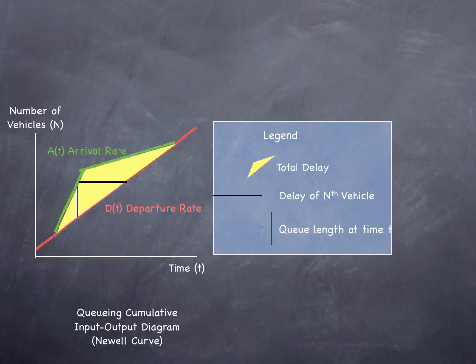There's an arrival rate. How do people arrive at the back of the queue? If the number of arrivals is less than the number of departures and it's uniform, there will be no queue.